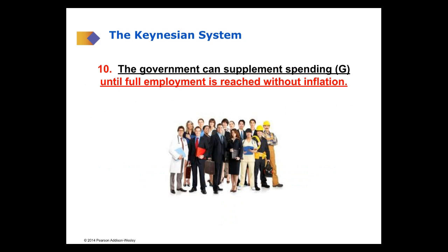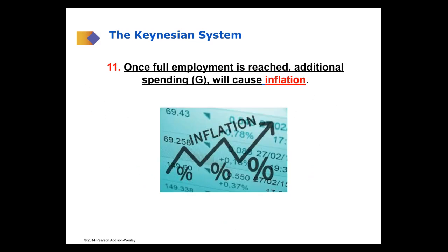The government can increase spending to increase demand and employment without worrying about inflation as long as they're below full employment. But once they reach full employment, any incremental spending on top of that will result in inflation. So they don't have to worry about inflation until they reach full employment — once they reach full employment, additional incremental spending will result in inflation, and they have to stop government spending to avoid creating inflation.